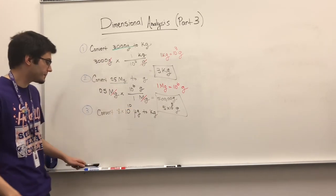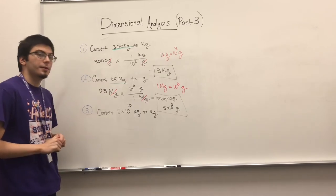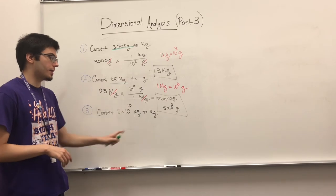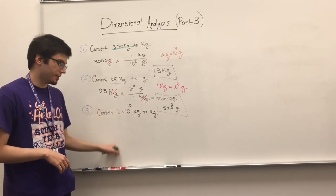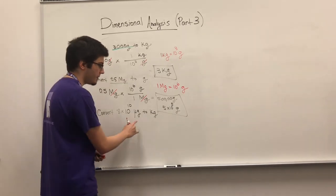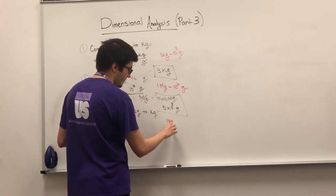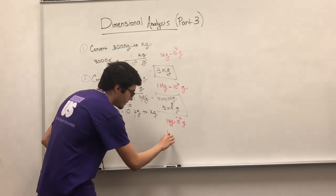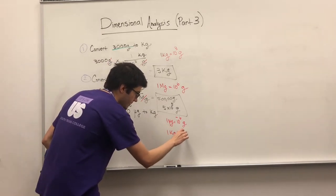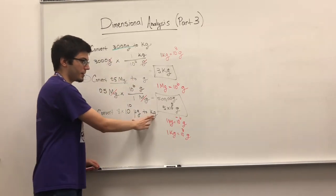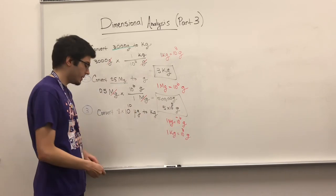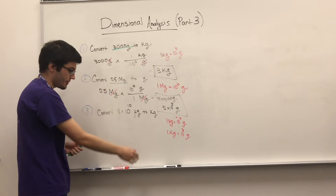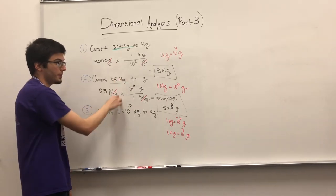Number three is a tricky one — go from micrograms, which is small, to kilograms, which is big. We don't have a direct connection between these two. We know one microgram is 10 to the negative 6 grams, and one kilogram is 10 to the 3 grams. They're both related to grams, so we go from small to grams and then to big. It's no longer a one-step problem — it's a two-step problem.